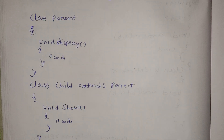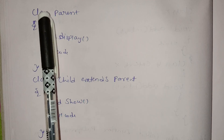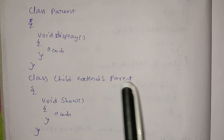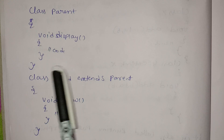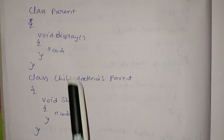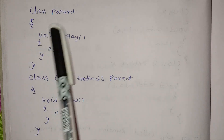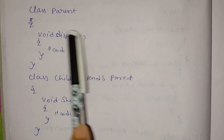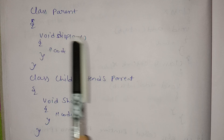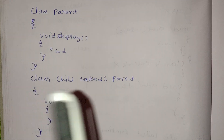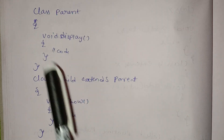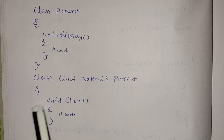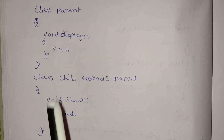The syntax for inheritance: class parent — here parent is the class name. Next, class child extends parent — child is the class name, and it extends the parent. Here in the child class we have void display and void show methods. This is how inheritance is structured — the child class uses and extends the parent class.